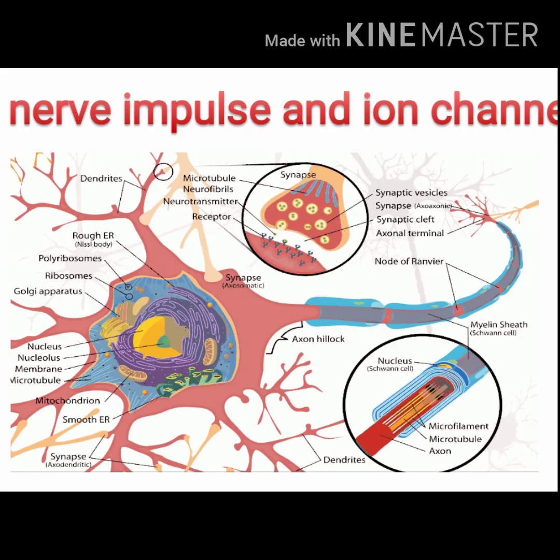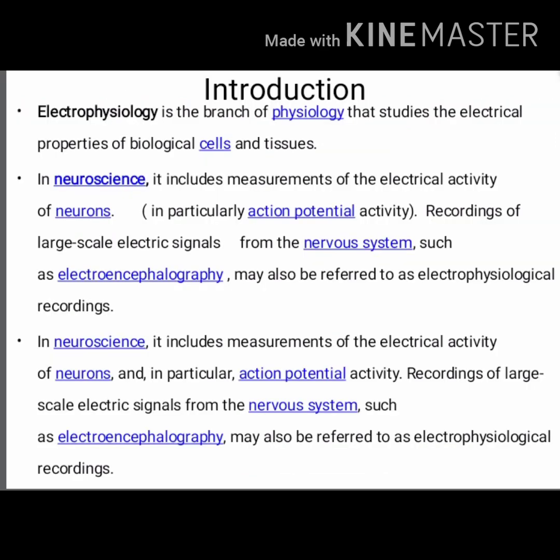Good morning students. Today we are going to see nerve impulses and ion channels. Previously we discussed the organization and structure of the nerves in our system. Electrophysiology is the branch of physiology that studies the electrical properties of biological cells and tissue. In neuroscience, it includes the measurement of electrical activity of neurons, particularly about action potential, and recording of large-scale electrical signals from the nervous system such as electroencephalography.